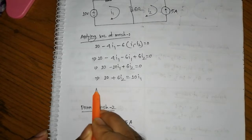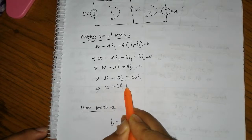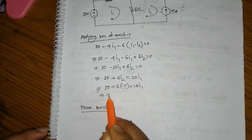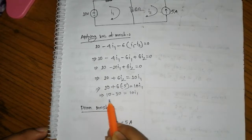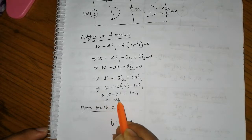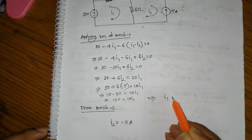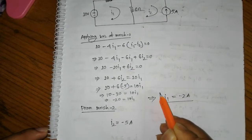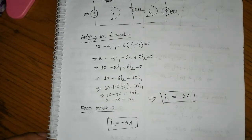Substituting i2 equals minus 5 into the mesh equation: 10 minus 30 equals 10i1, so minus 20 equals 10i1, therefore i1 equals minus 2 ampere. So i1 equals minus 2 and i2 equals minus 5.